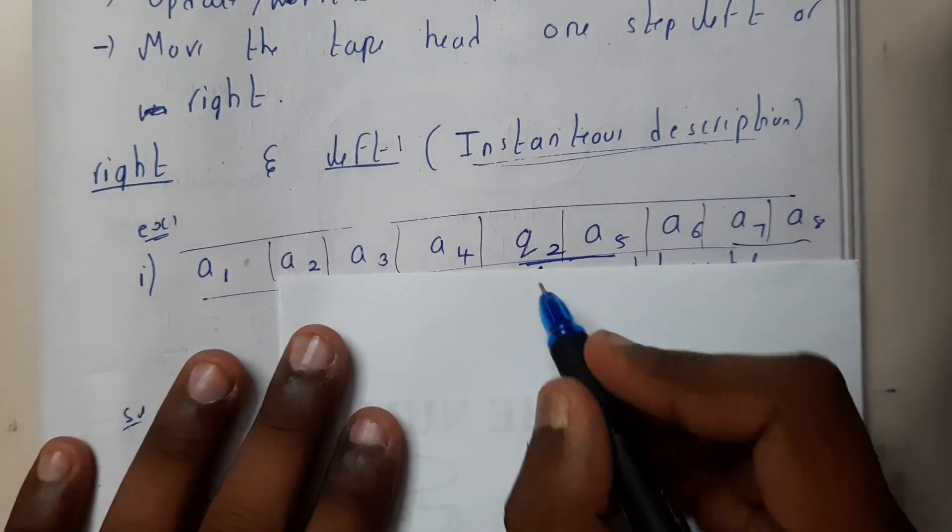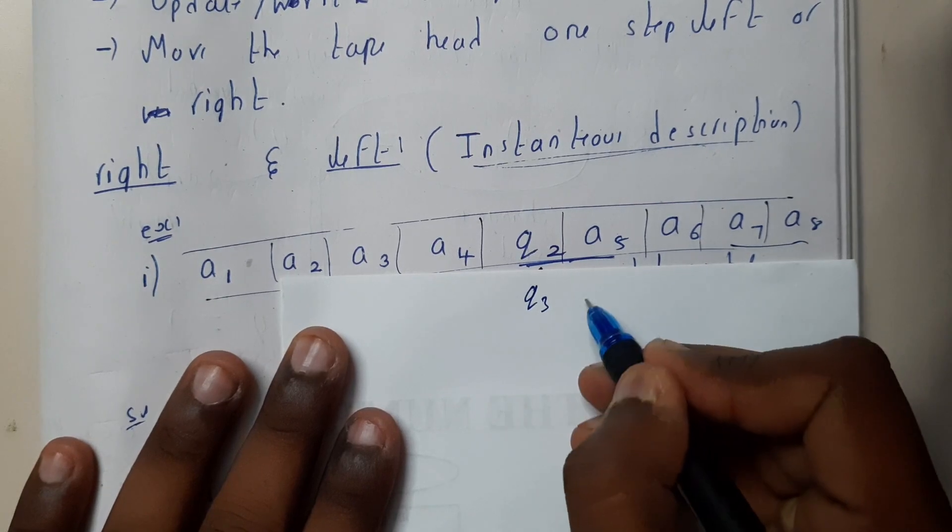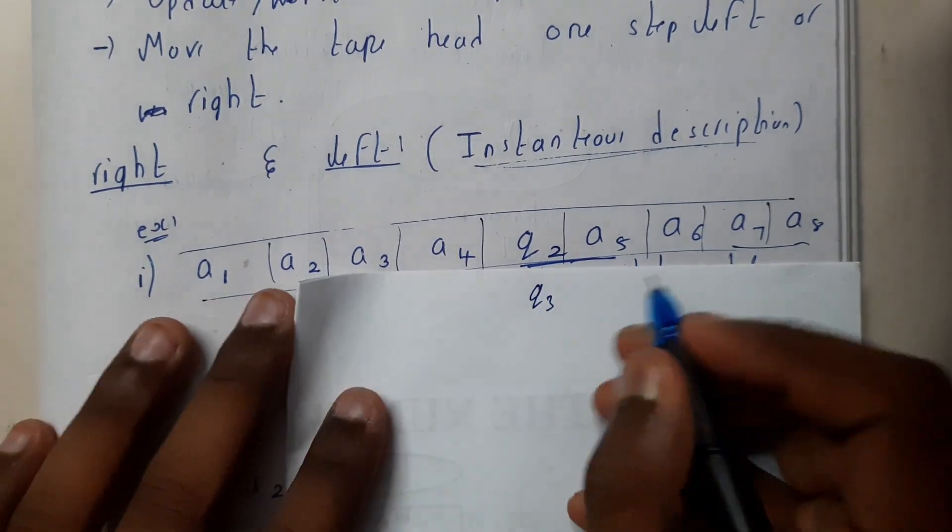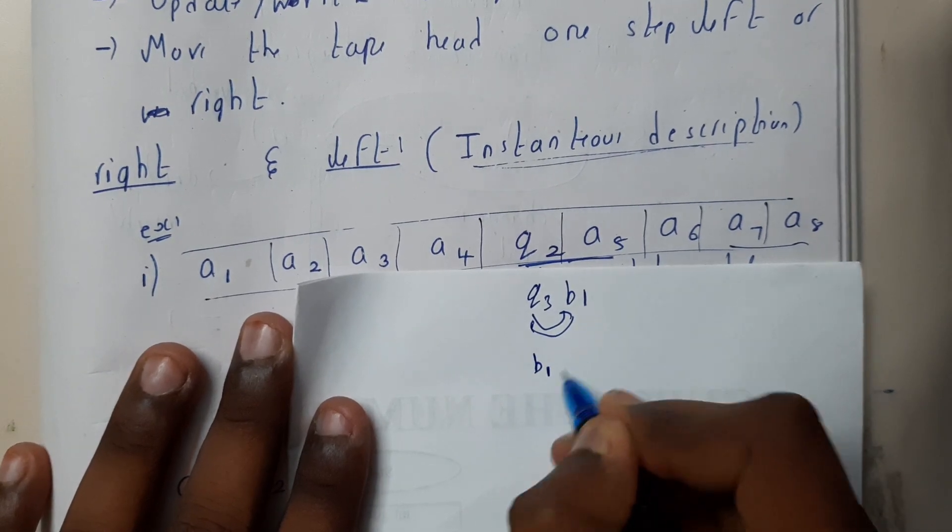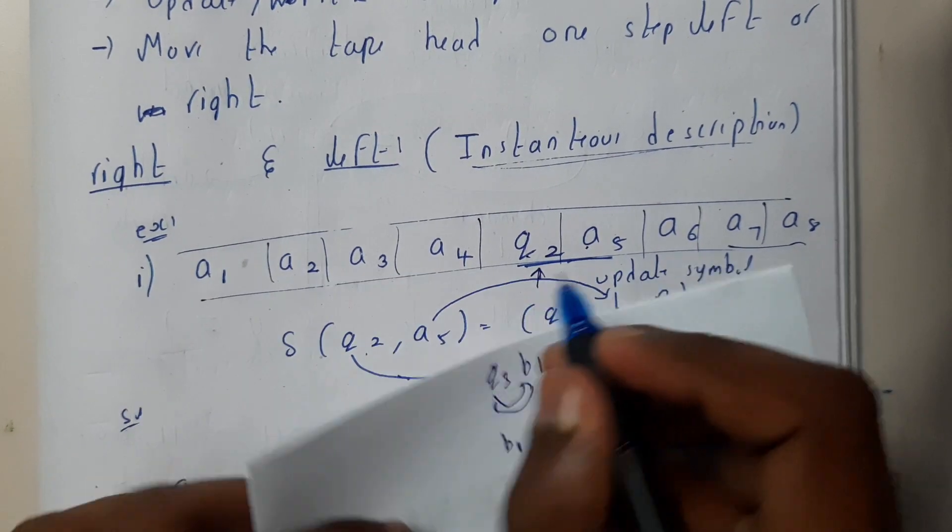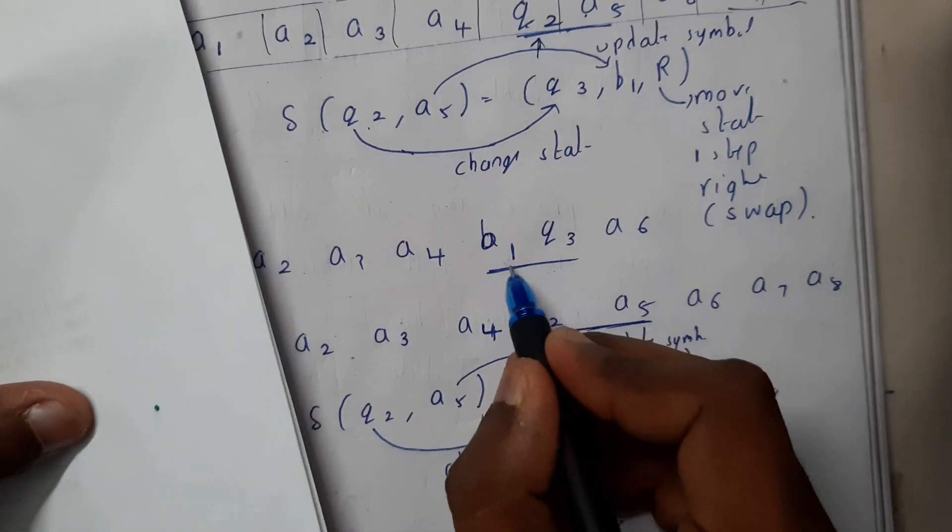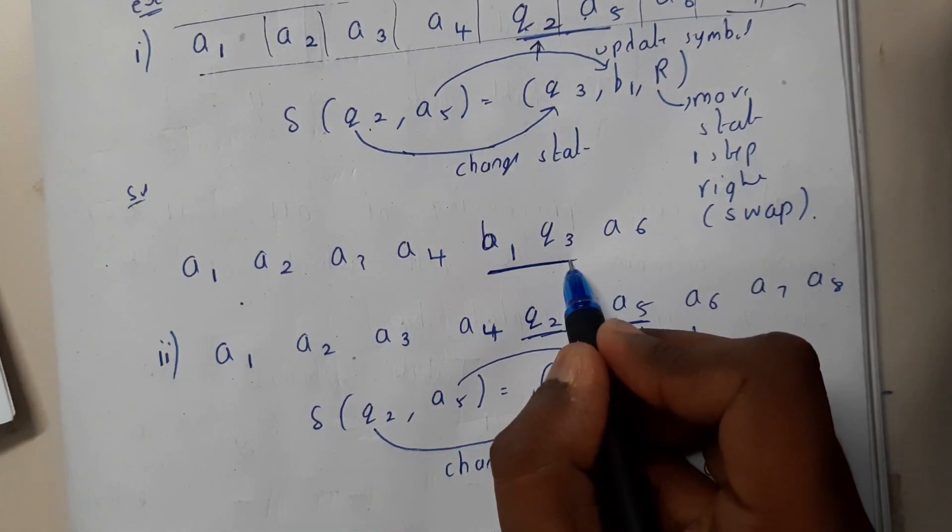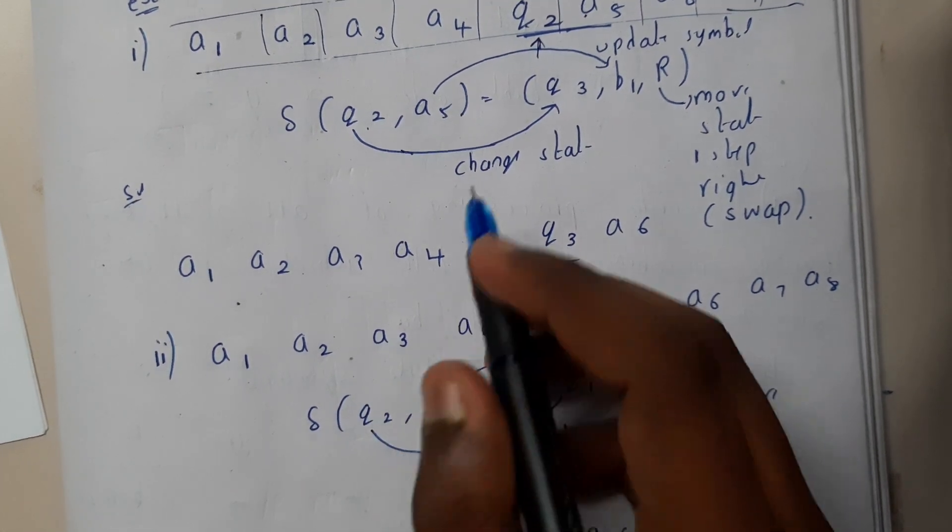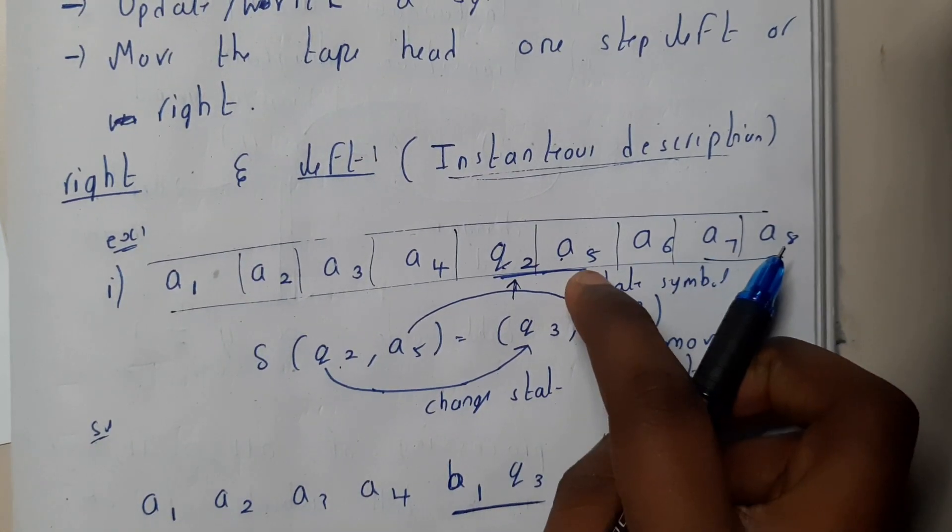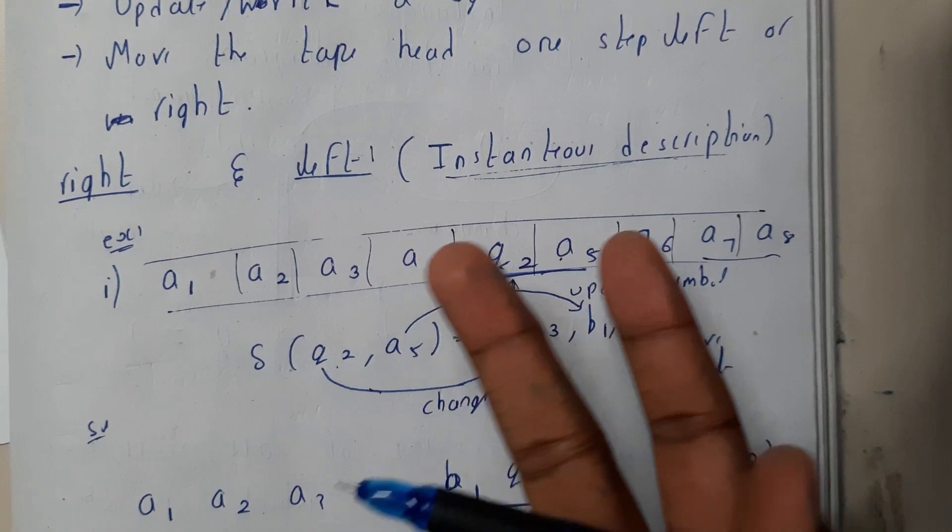Here it is q3 and here we changed it to b1. Now we need to move it right, so these two will be swapped. So b1 comma q3 will be the right movement. Right movement is really simple when compared to left. Right movement is nothing but we need to update both and swap them.